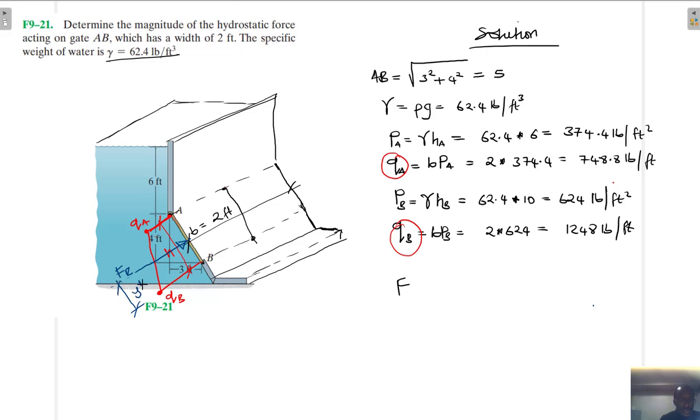All right, so my resultant force, I'll use the formula for area of a trapezoid. It's going to be equal to a plus b, or instead of using a plus b, I will say qA plus qB divided by 2 times h. What's my qA? My qA is 748.8. And what's my qB? It is 1248 divided by 2.